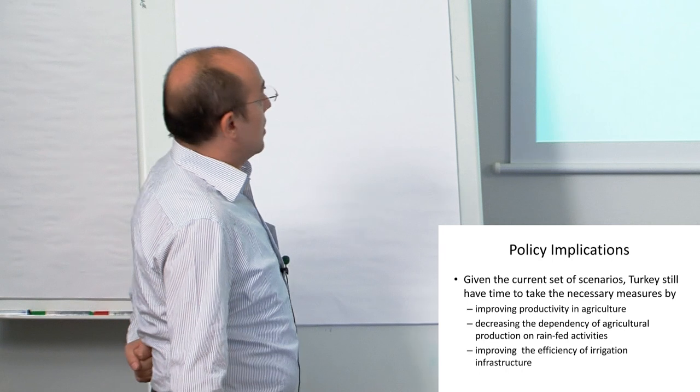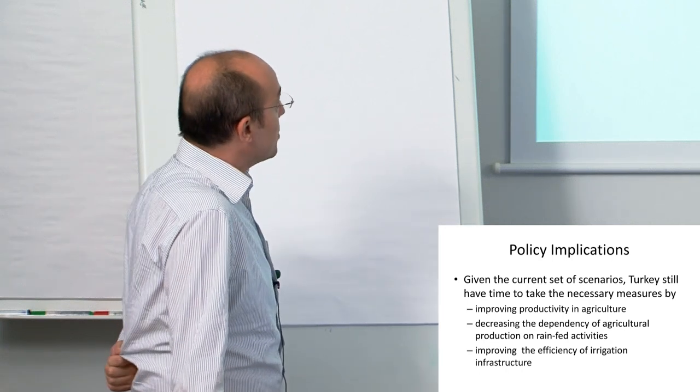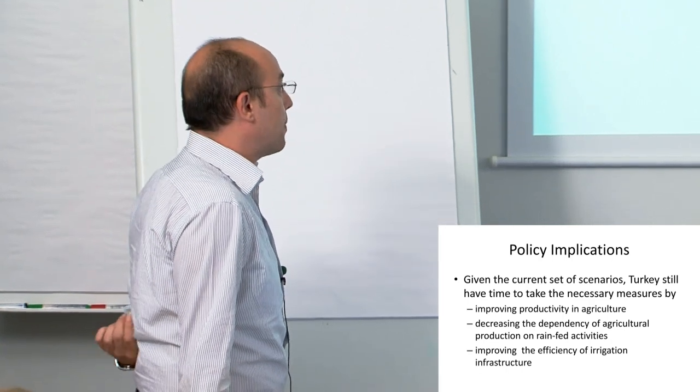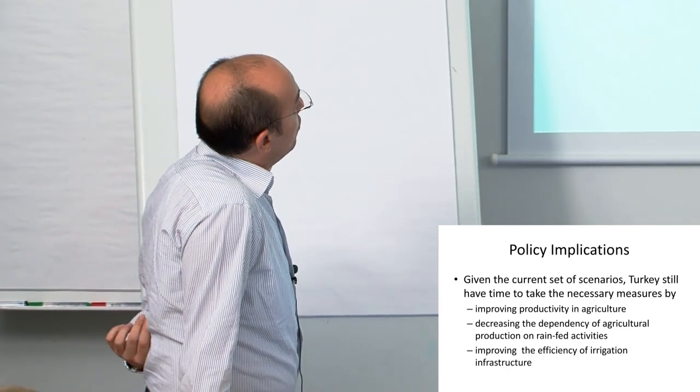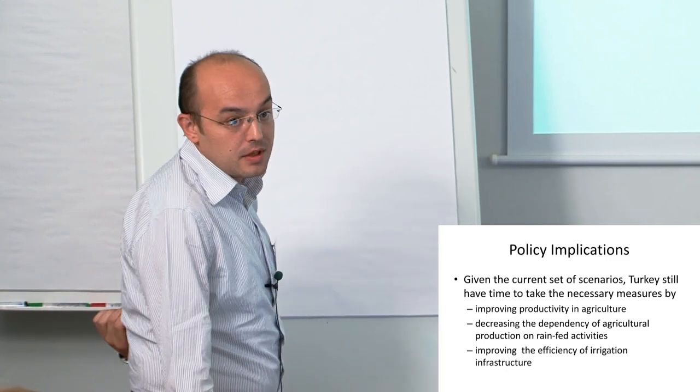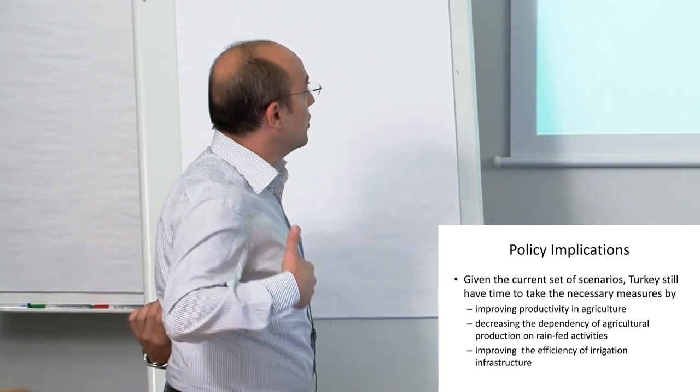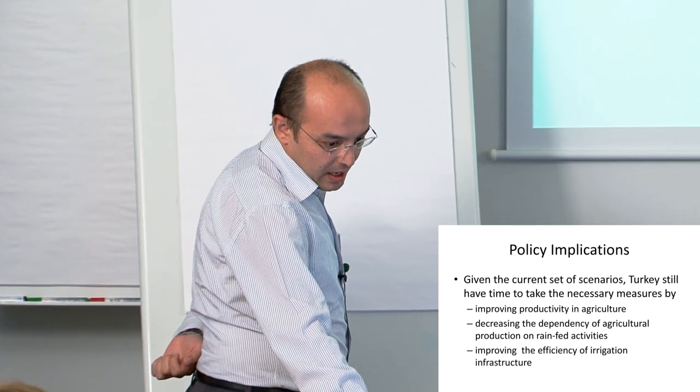Policy implications for Turkish policymakers: we should in any case improve productivity in agriculture, decrease dependence of agricultural production on rain-fed activities, and improve efficiency of irrigation infrastructure.